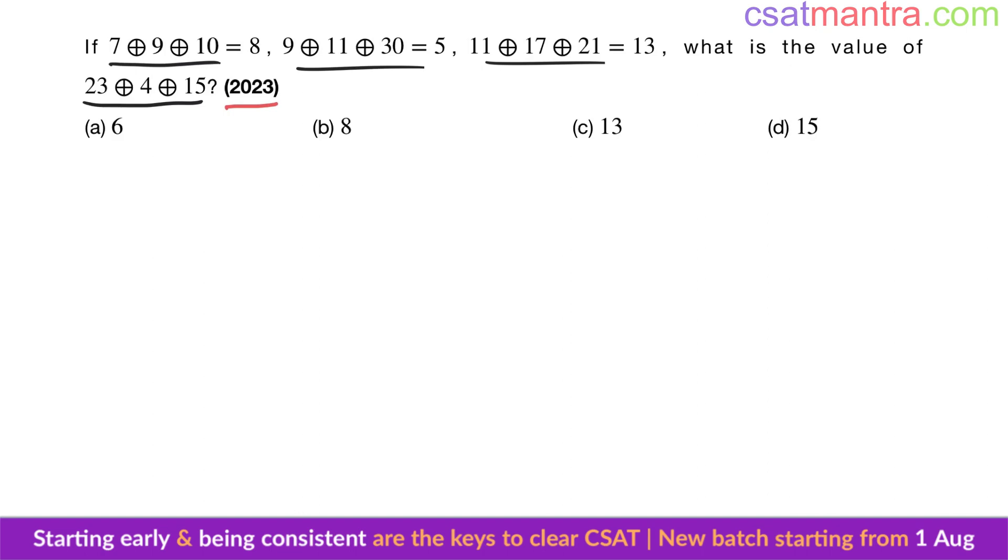So let's try with the addition first. 7 plus 9 is 16, 16 plus 10 is 26. 26 we are getting as 8, that means see 2 plus 6, so there is some relationship between them. Now 9 plus 11 is 20, 20 plus 30 is 50. Okay, 50 we are getting as 5, digits added.